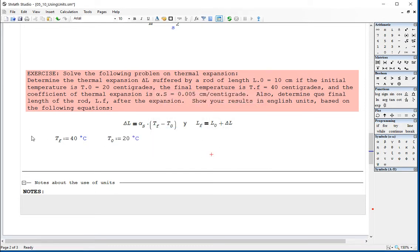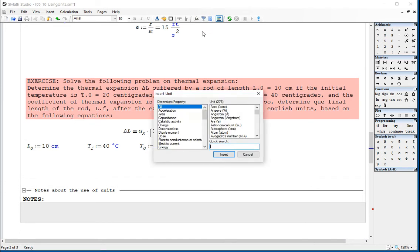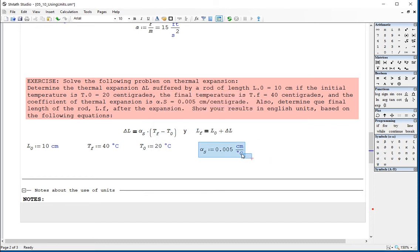And so T sub 0 is 20 centigrade. So again, from the funnel, find temperature, centigrade, so Celsius. And the initial length L0 is 10 centimeters. So let's try that again. As long as you leave this, I'm going to move these things to the right and put L0 equals 10 centimeters. And the coefficient of thermal expansion alpha_s equals 0.005 centimeters divided by centigrade. And so here I'm going to go to temperature Celsius.